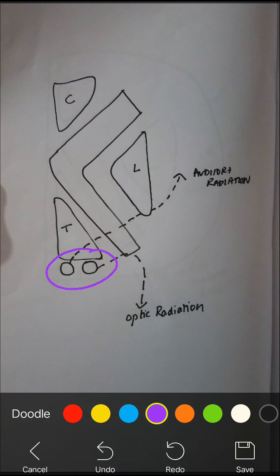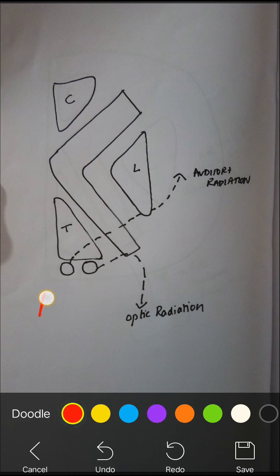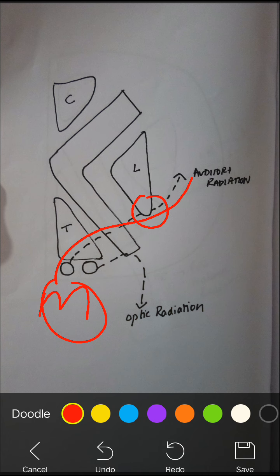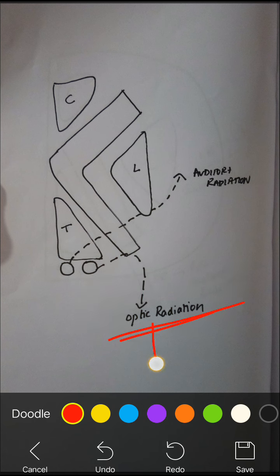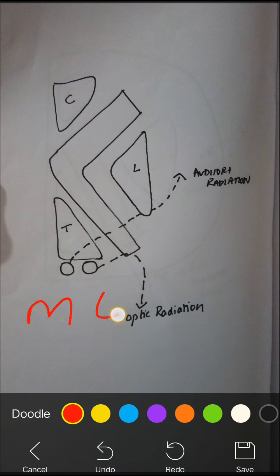The medial geniculate body — M for music — carries auditory radiation. It passes underneath the lentiform nucleus, so it is called the sublentiform part, going into the auditory cortex. The lateral geniculate body goes in the retrograde direction, so it is called the retrolentiform part. L for light — it carries optic radiation going into the visual cortex.